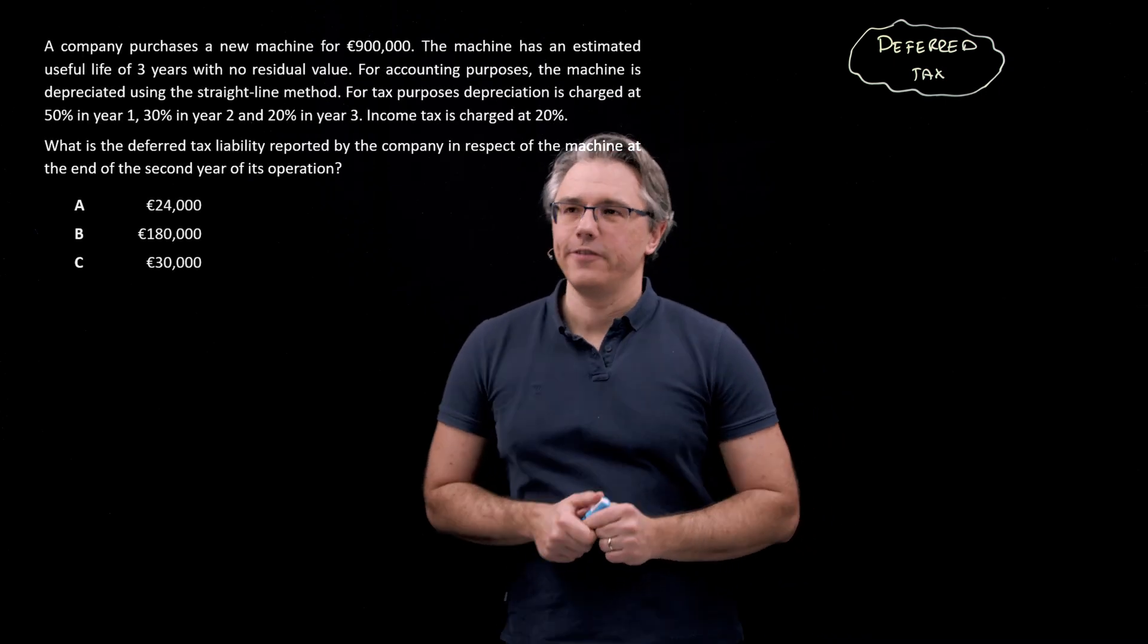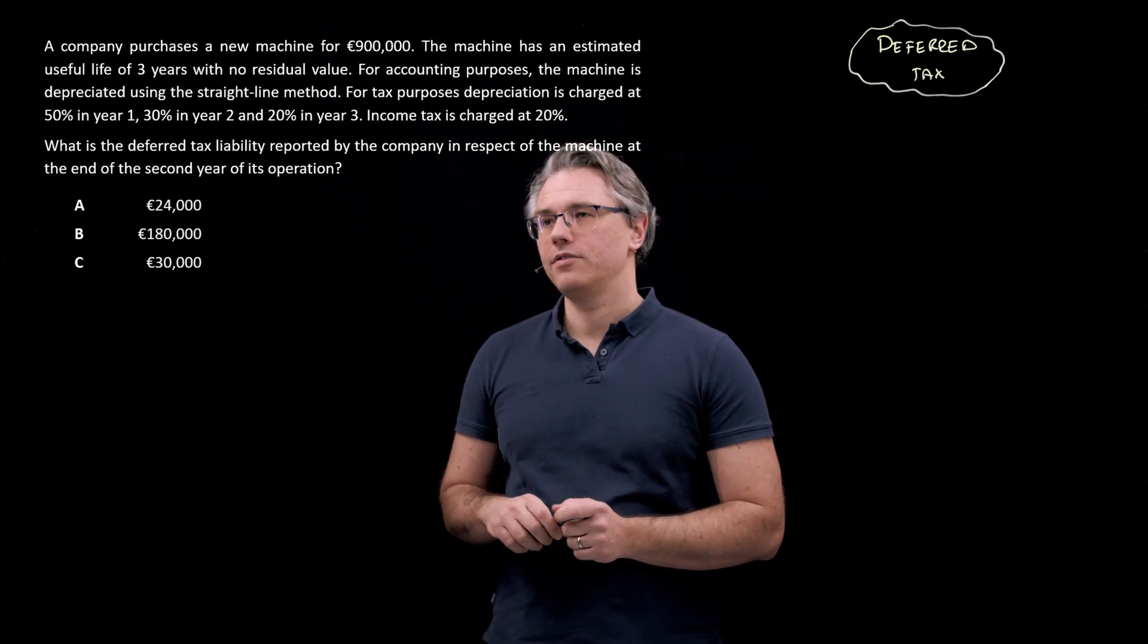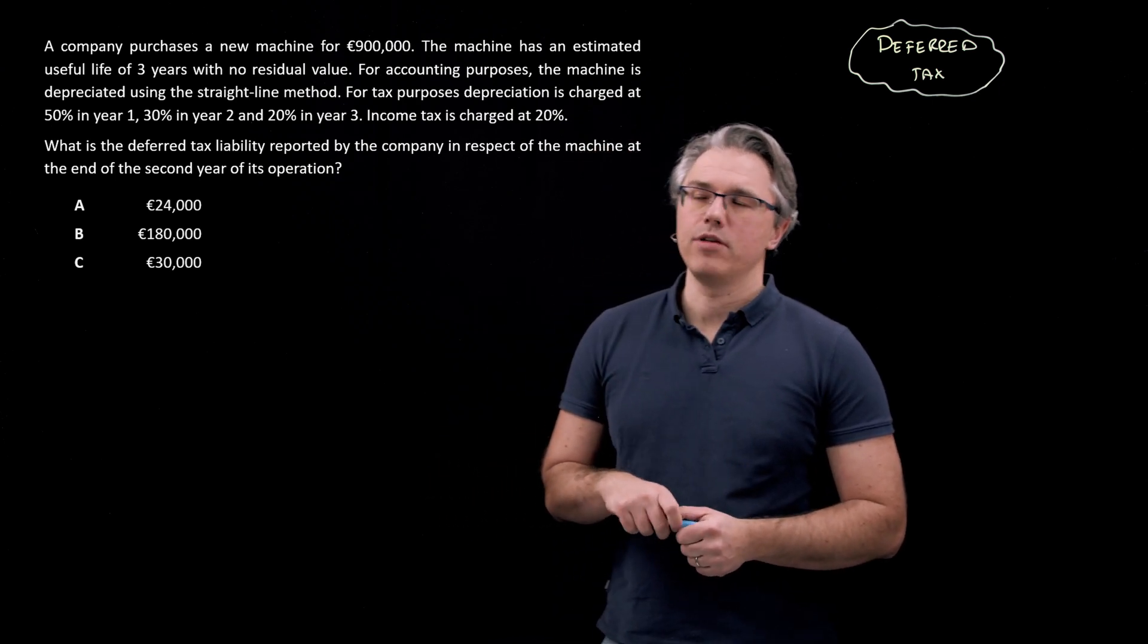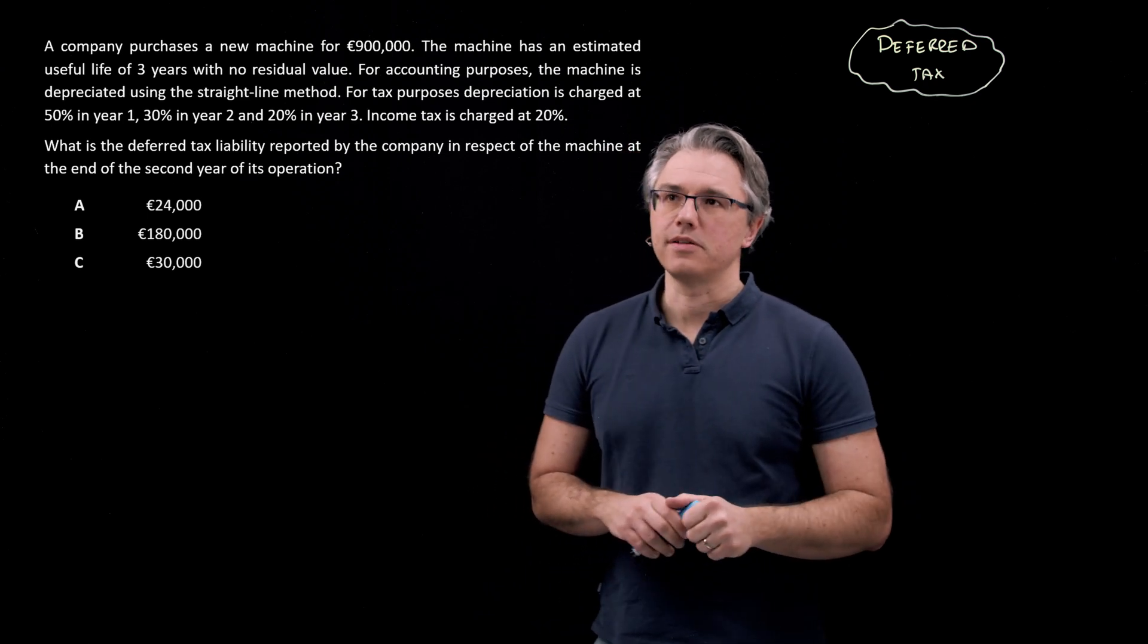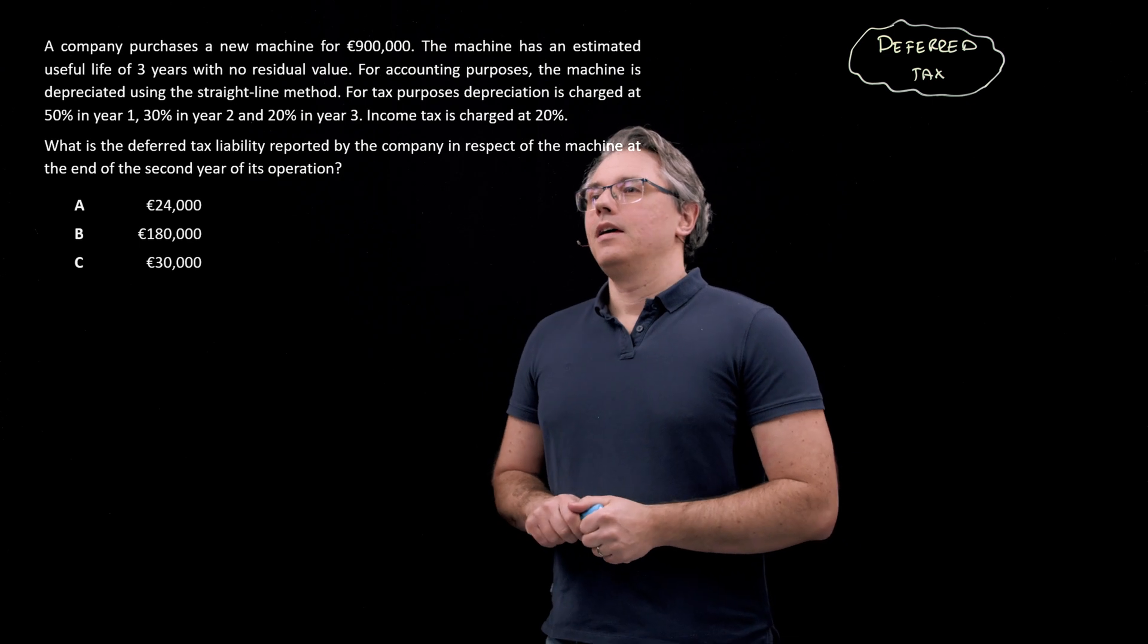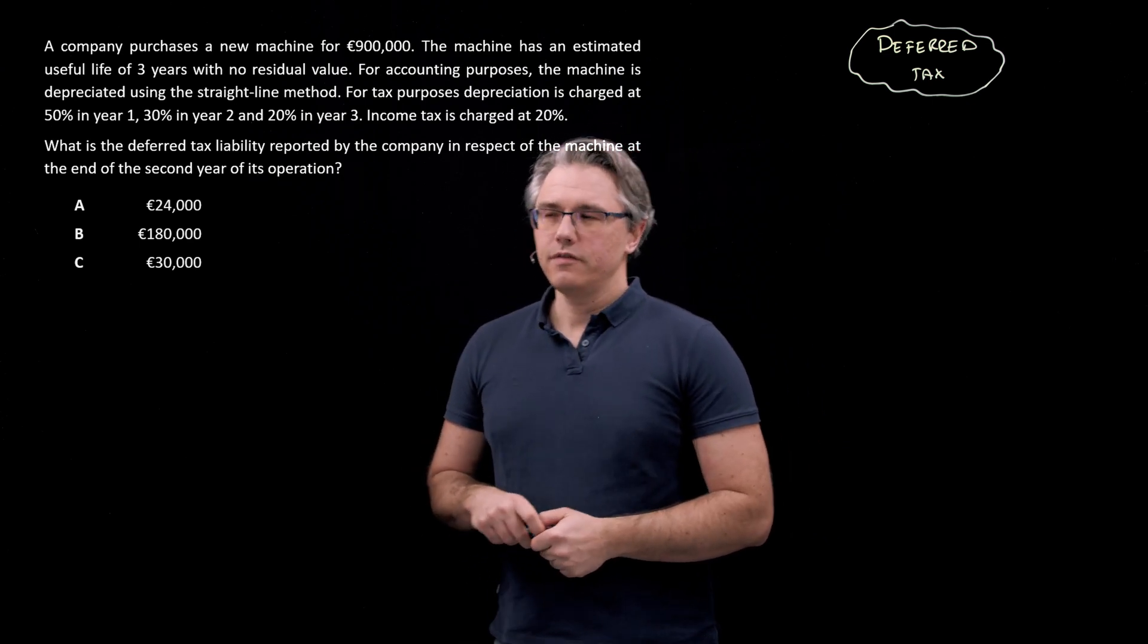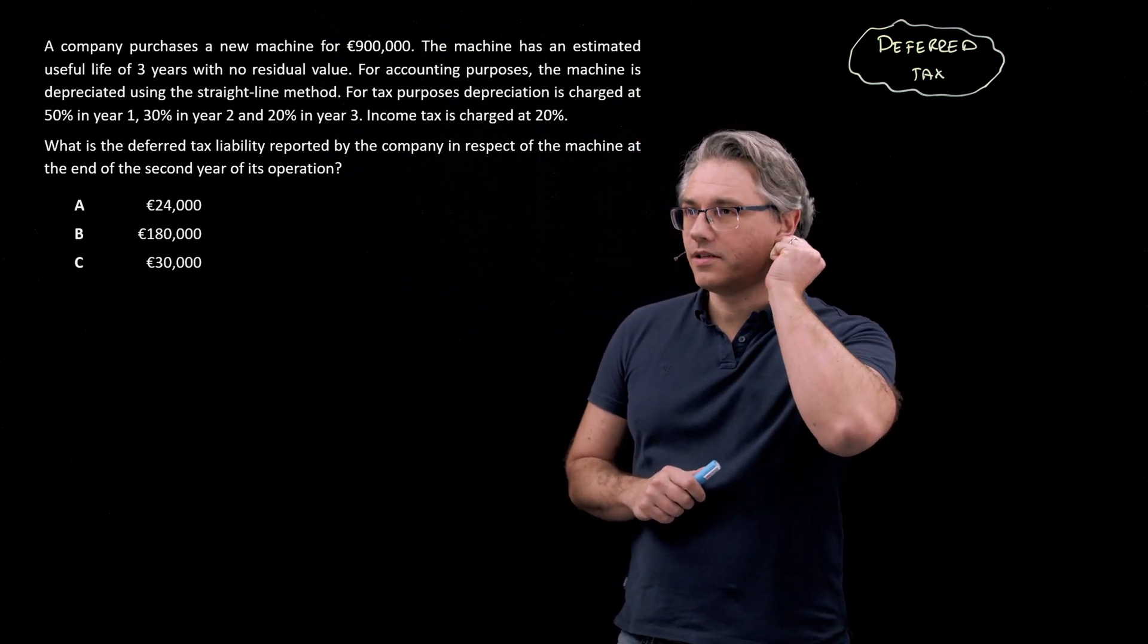This is the question which I want us to have a go at. A company purchases a new machine for 900,000 euro. The machine has an estimated useful life of three years with no residual value. For accounting purposes, the machine is depreciated using the straight line method. However, for tax purposes, depreciation is charged at 50% in year one, 30% in year two, and 20% in year three.